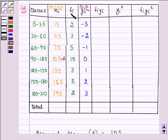Now I need to multiply fi with yi and it is equal to minus 6, minus 6, minus 5, 0, 3.